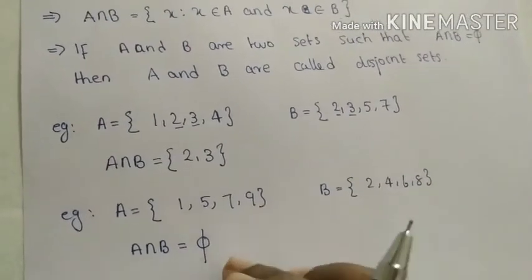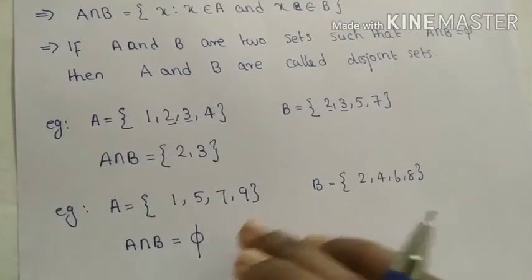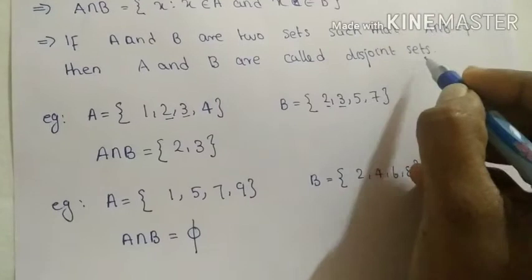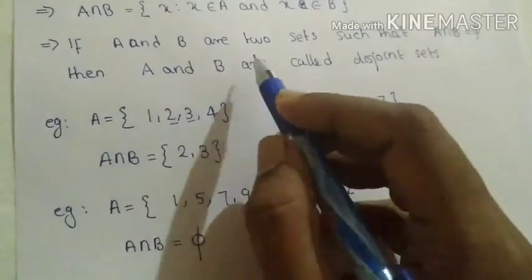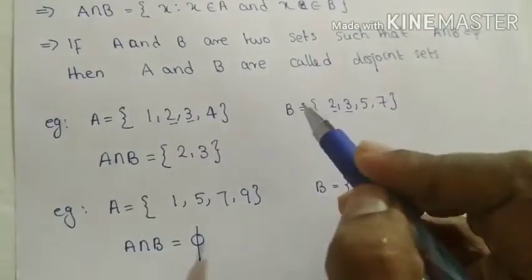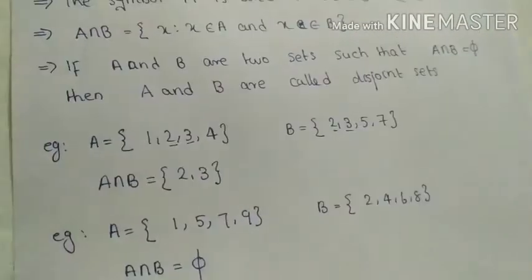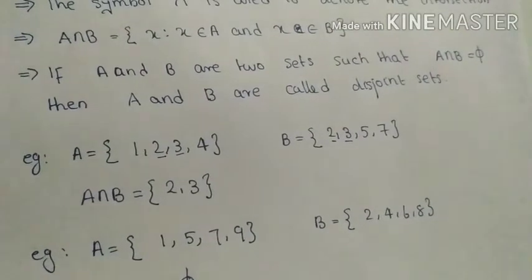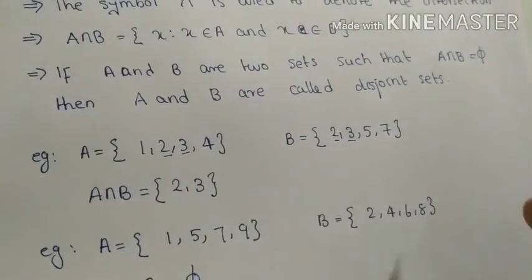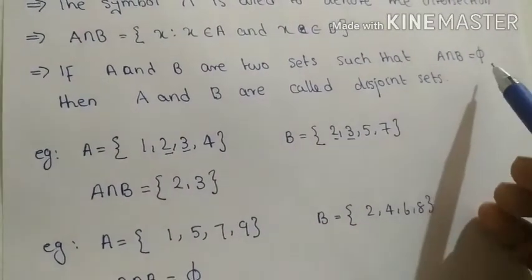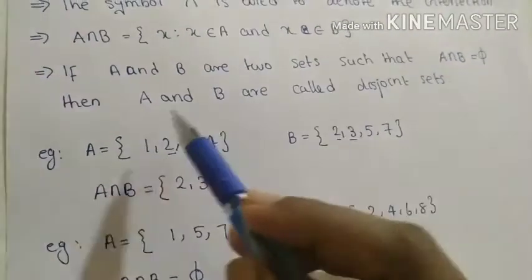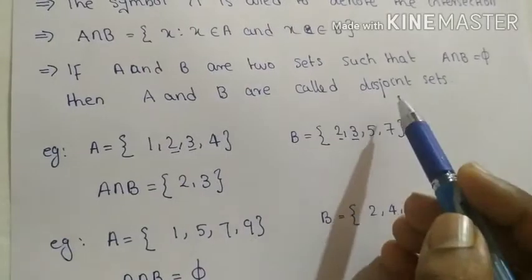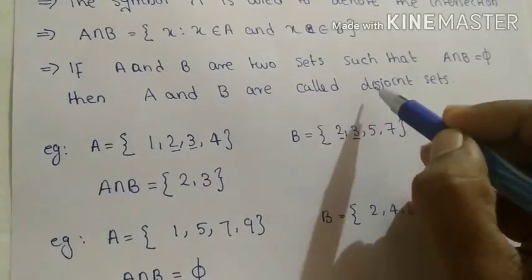Such types of sets are called disjoint sets. If A and B are two sets such that A intersection B is equal to the null set, then A and B are called disjoint sets.